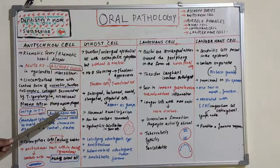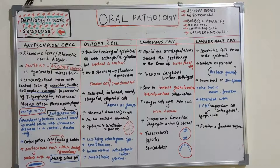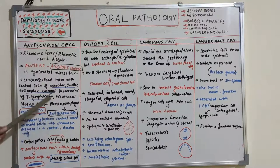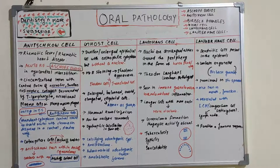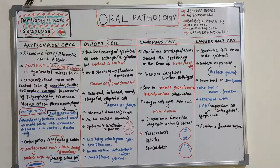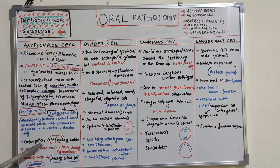The Anishkov cell is present within the Ashoff's body, which is a granulomatous tissue. It is a characteristic feature of rheumatic fever or rheumatic heart disease. In transverse section, it also looks like an owl's eye — owl's eye appearance is also seen in Reed-Sternberg cells, which are a characteristic feature of Hodgkin's lymphoma, but in Anishkov cells this is only visible in transverse section. It is also known as a caterpillar cell.